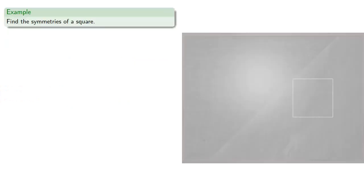So we might try to find the symmetries of a square, and so we see that a square has rotational symmetries of 90, 180, and 270 degrees.